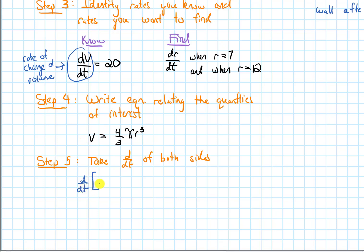We will take d/dt of the left-hand side, and that's going to be equal to d/dt of the right-hand side. So we'll have d/dt of V is equal to d/dt of 4/3 π r cubed. As we mentioned, now we want to do implicit differentiation on this. On the left-hand side, the derivative of V we would write as dV/dt.